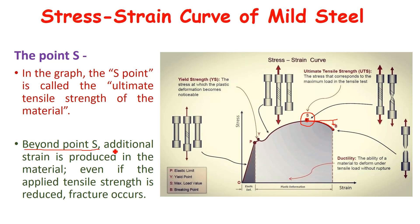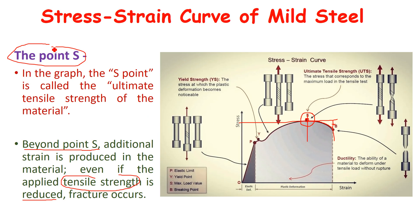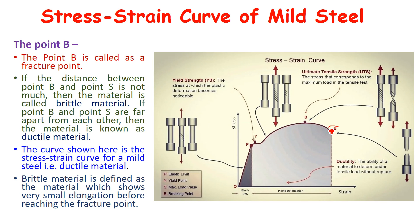Beyond point S, additional strain is produced in the material even as the applied tensile stress is reduced. That is the zone from point S to point B. The last point is point B, which represents the breaking point or fracture point of the material.